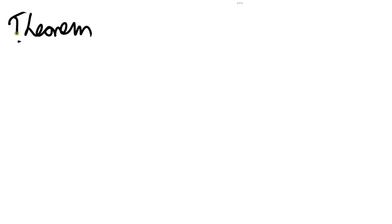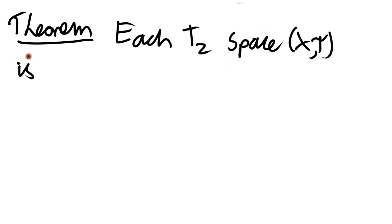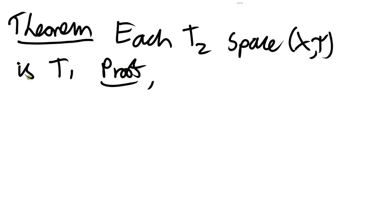A word of warning: the converse of this is not true — you can find examples of Hausdorff spaces which are not metrizable. This is a rather challenging and cutting-edge subject; the study of when particular Hausdorff spaces are metrizable is still ongoing. Let's continue to prove results about the hierarchy of these separation axioms. Our next result is that each T2 space — each Hausdorff space — is T1.